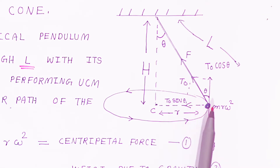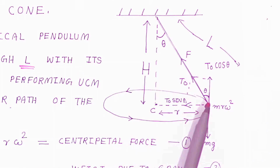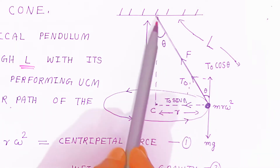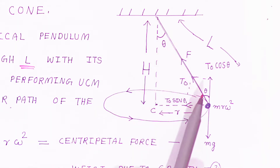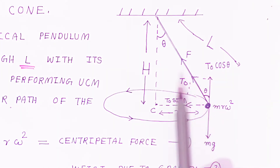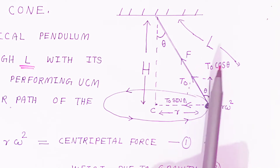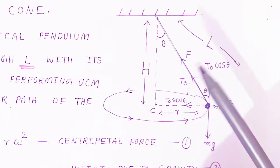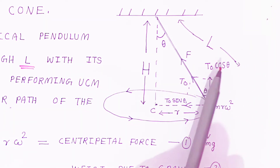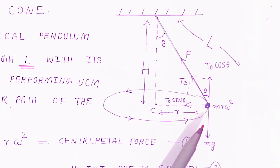What forces act on the bob? There is a tension T created in the string along the string. This tension is resolved into two components because of the uniform circular motion: T cosθ in the vertically upward direction, and T sinθ in the horizontal direction. T cosθ balances the weight of the bob, that is mg.